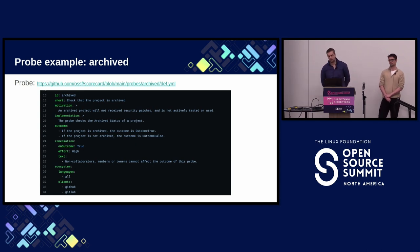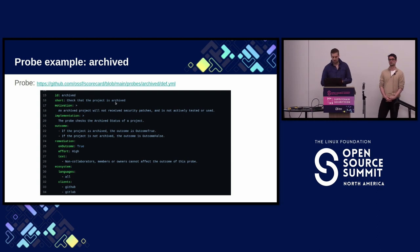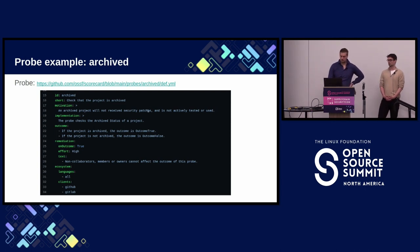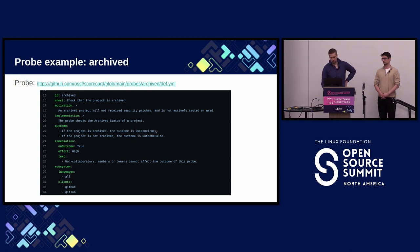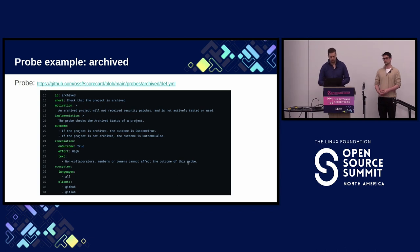The definition of a probe looks like this. We have the ID at the top and a description. This is the archive probe which checks whether a project is archived — the motivation being that archived projects for the most part don't get security patches or security disclosures. We have the outcome defined: if the project is archived, this probe returns outcome true; if it's not archived, the outcome is false. We also have remediation guidance that describes how a project could remediate a negative outcome.